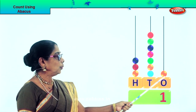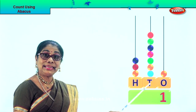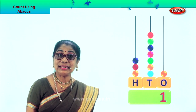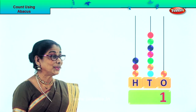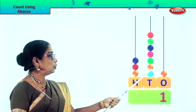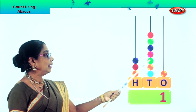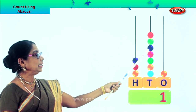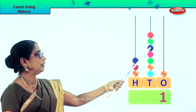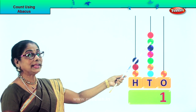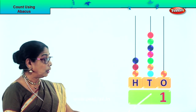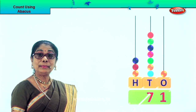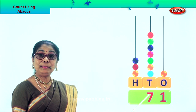Now we go to the 10s place. We will count in 10s: 10, 20, 30, 40, 50, 60, 70. We put down 7. There are 7 beats — 70.